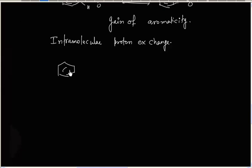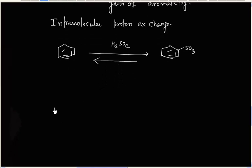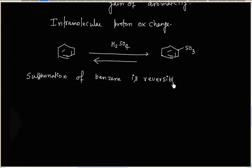Now we have benzene treated with H₂SO₄ giving sulfonated benzene. Importantly, sulfonation of benzene is reversible. This is because the SO₃ group is a good leaving group.